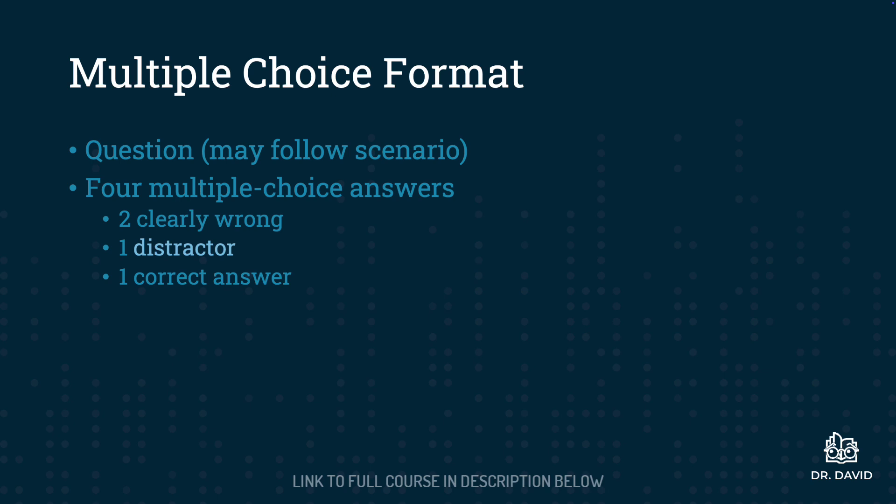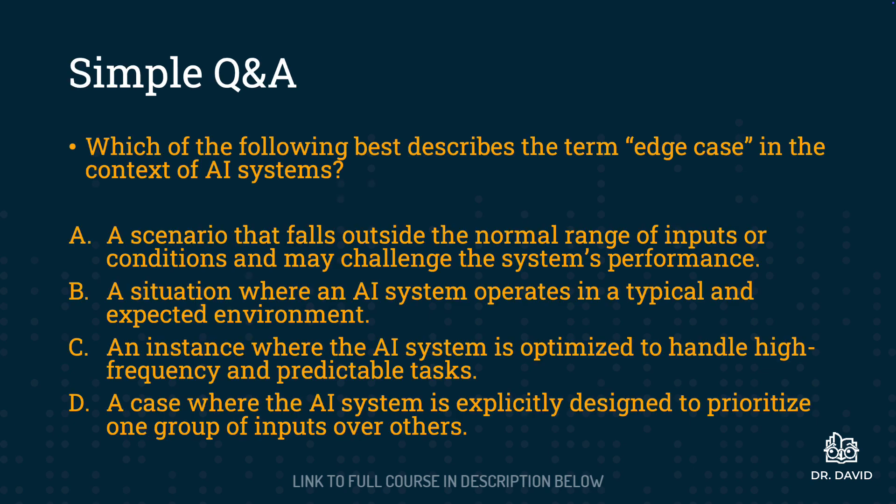Know going into the exam that you're typically going to be able to eliminate two of the answers right away. You're then going to be left with the distractor and the correct answer. From the remaining two answers, you will need to use your analysis skills to figure out which one is the distractor and which one is the correct answer. Now I want to take a look at the three different types of questions that you're likely to see on the exam.